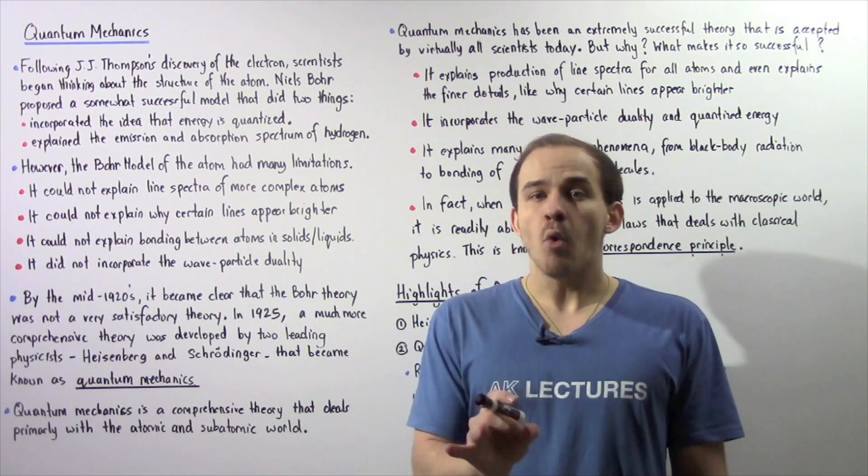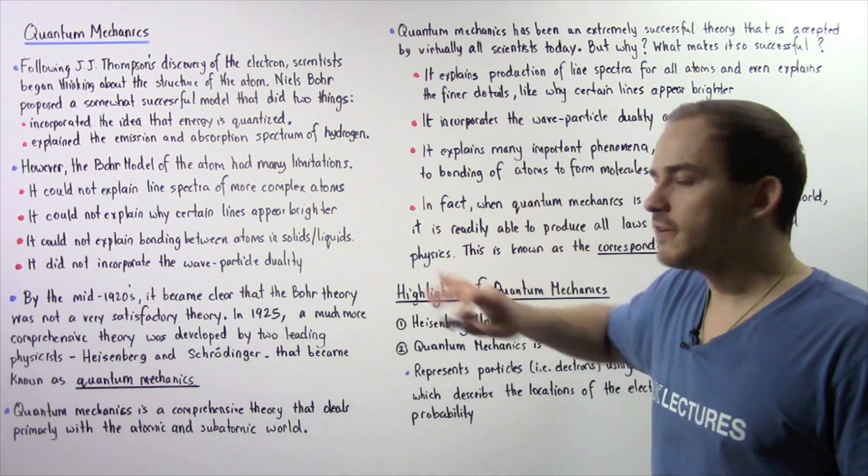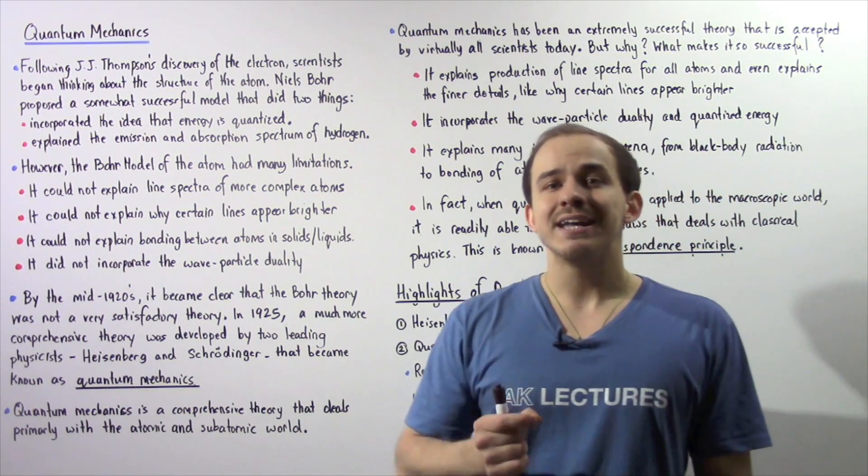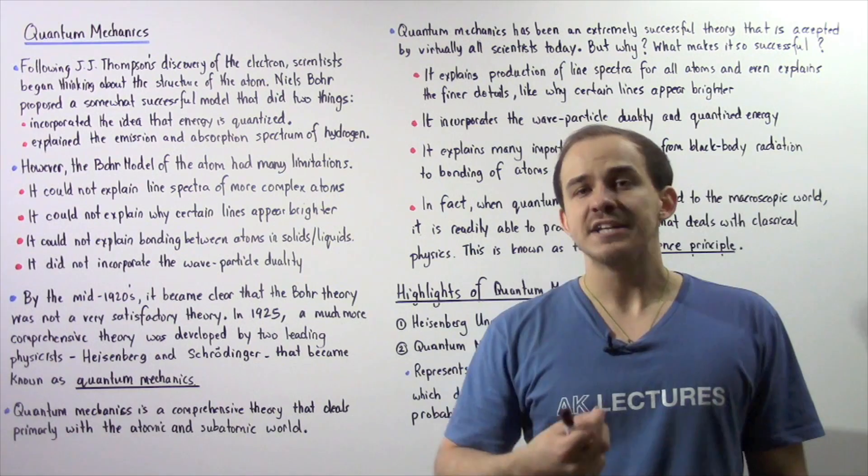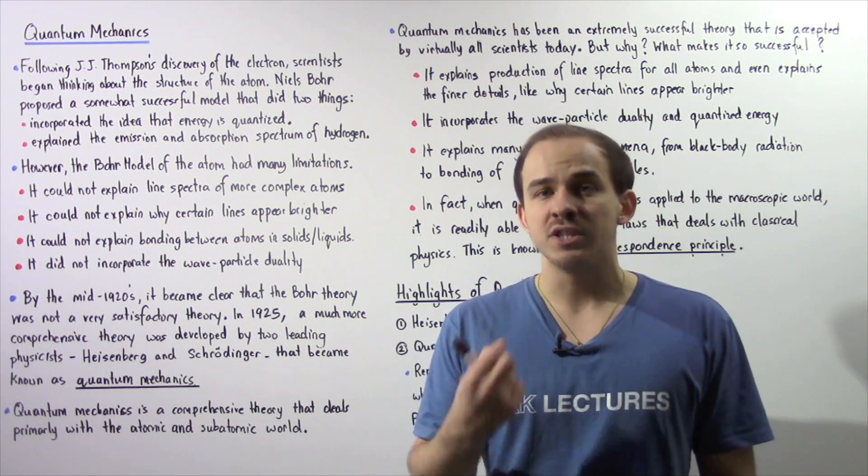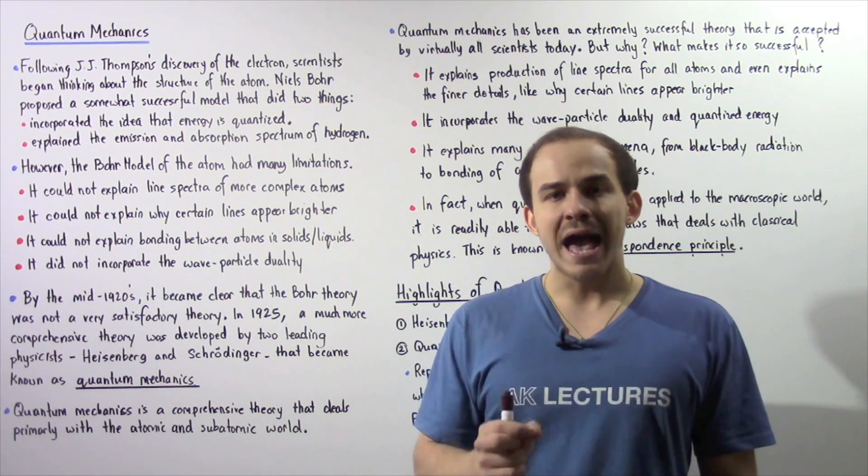However, the Bohr model did have many limitations as described in the following four points. So firstly, the Bohr model could not explain the production of line spectra of more complex atoms. It could not even explain the production of line spectra by the helium atom.